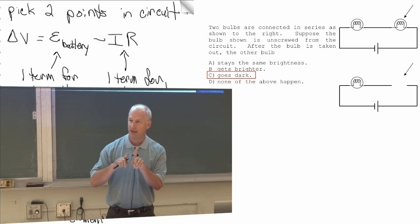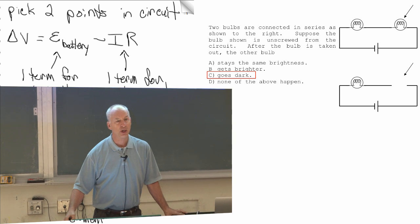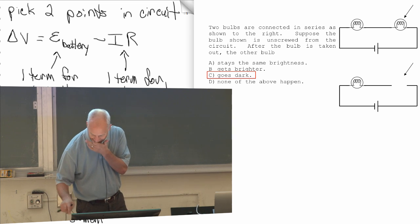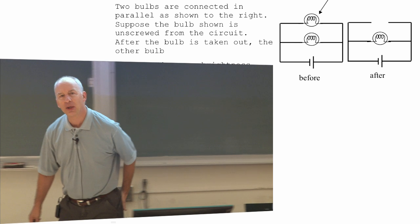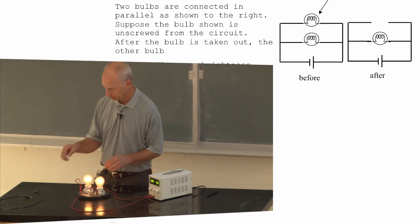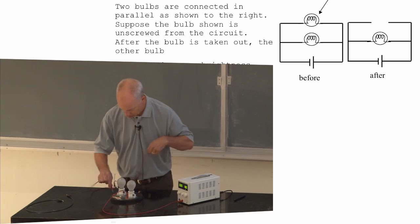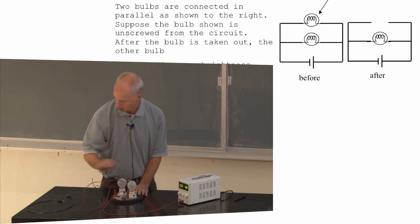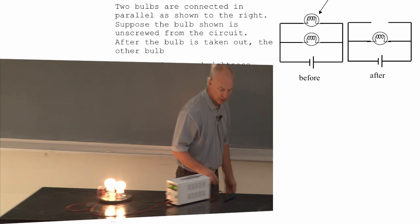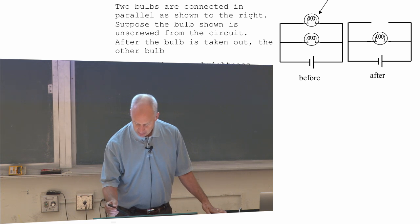And so, once you have more than one loop, the currents don't all have to be the same. And actually, once you have more than one loop, and here's more than one loop. Once you have more than one loop, not only do the currents not have to be the same, something else happens.